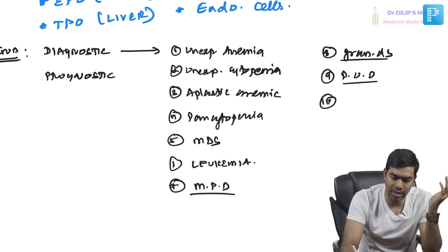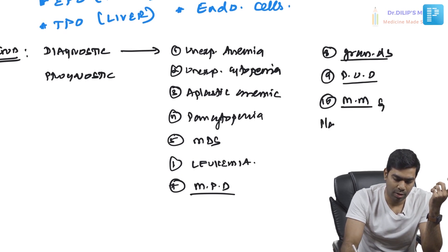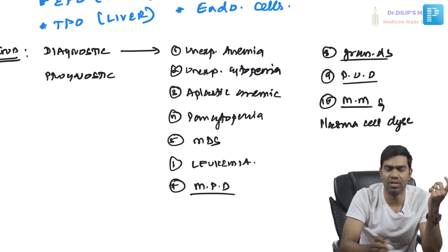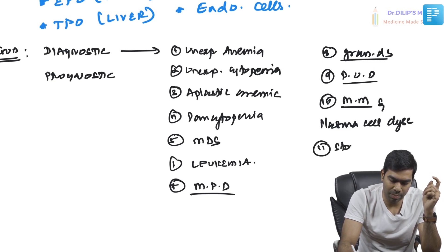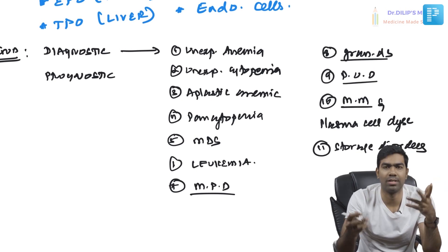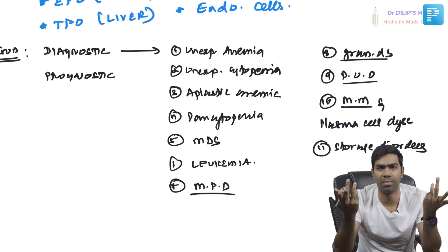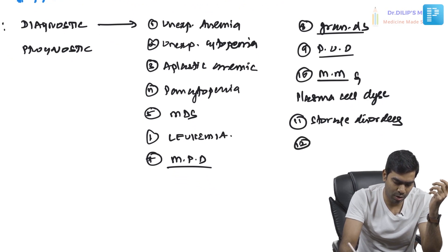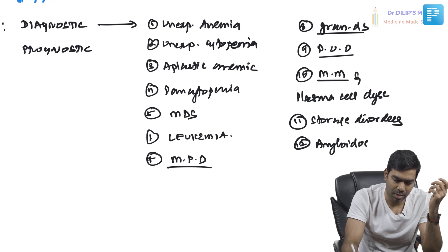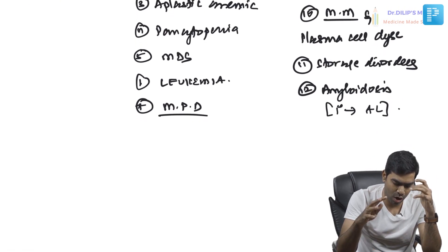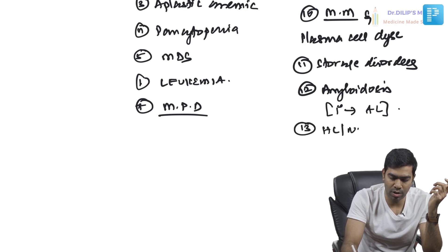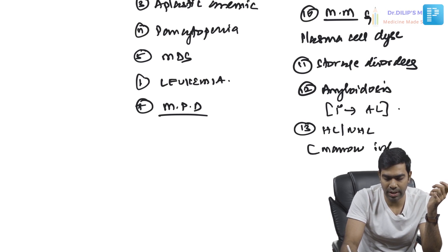When you are thinking about multiple myeloma and other plasma cell dyscrasias, you can do a bone marrow because the definition of plasma cell dyscrasias is based on the number of plasma cells in the bone marrow. So definitely in these conditions you can use it. Sometimes in storage disorders also — like Gaucher's disease, where the macrophage in the bone marrow will have a crumpled paper appearance. Then in amyloidosis, especially primary amyloidosis (light chain amyloidosis), bone marrow examination can be done. Apart from this, lymphomas — especially if you suspect marrow infiltration — are also indications.